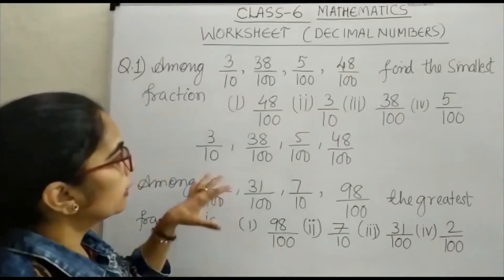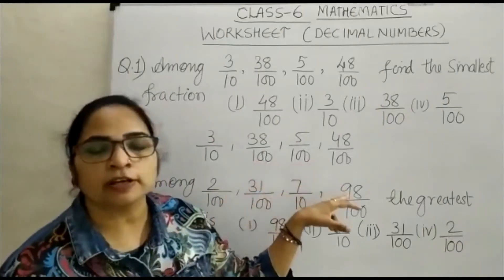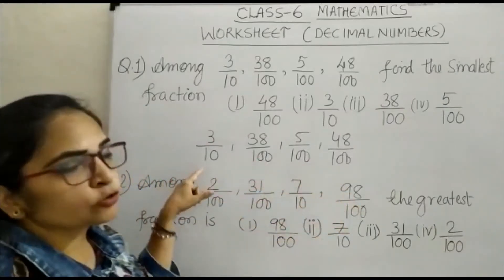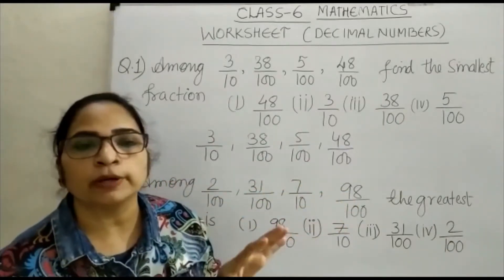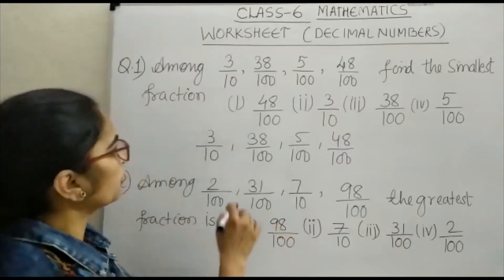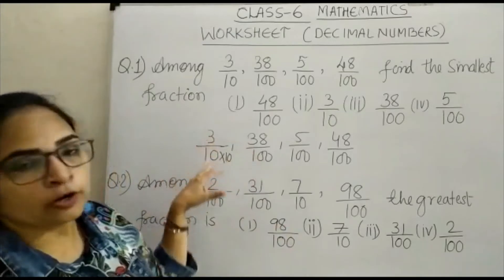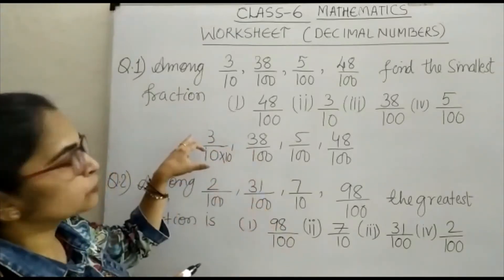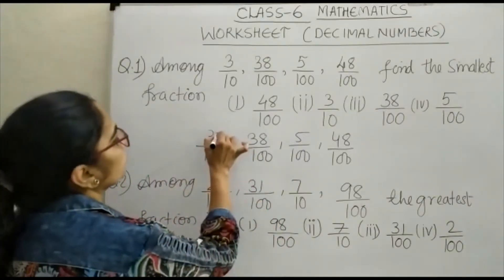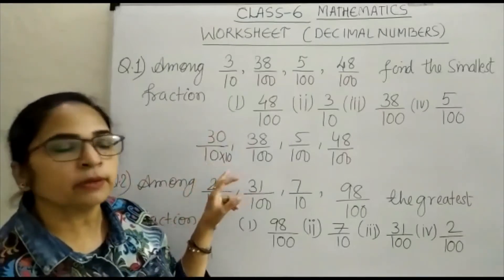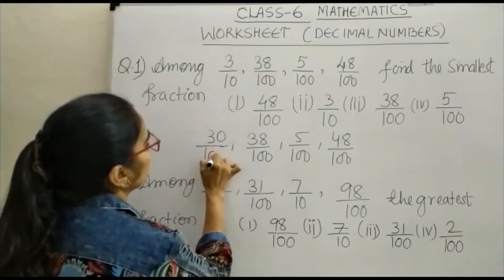to take the same fraction. Here you have to see these three fractions have the denominator 100, because the first fraction has denominator 10. So what do you do? You have to multiply the numerator and denominator both by 10. So when you multiply the numerator by 10, it will be 30, and the denominator will be 100.